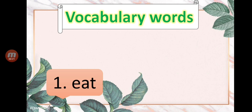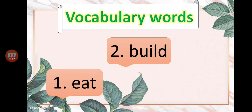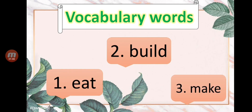The first word is 'eat.' Let us read: eat. Let us spell the word eat: E-A-T. The second word is 'build.' Let us spell: B-U-I-L-D. The third word is 'make.' Let us spell: M-A-K-E. Very good!